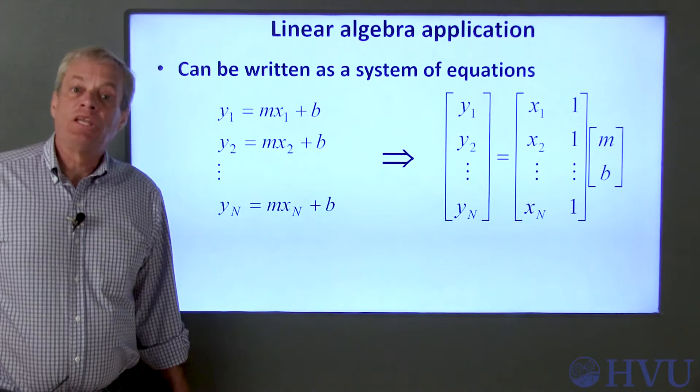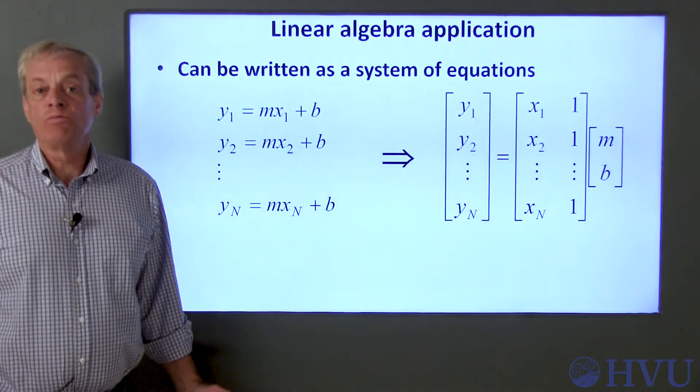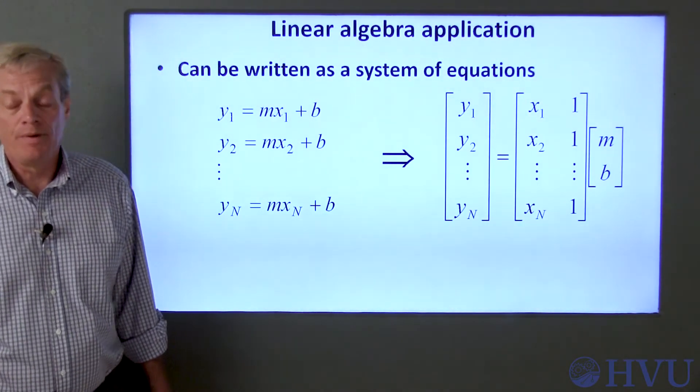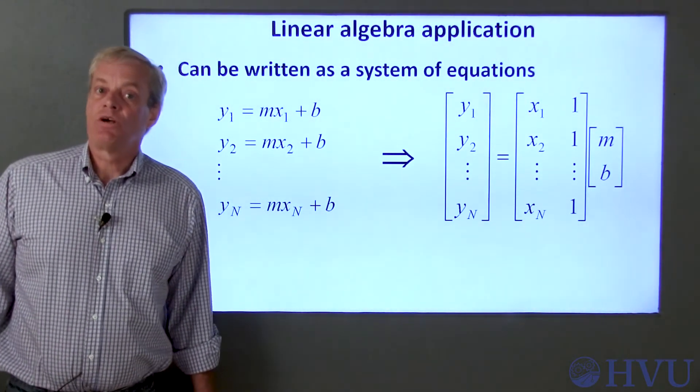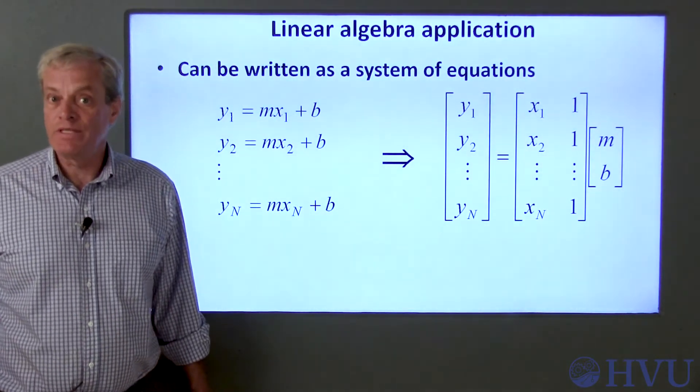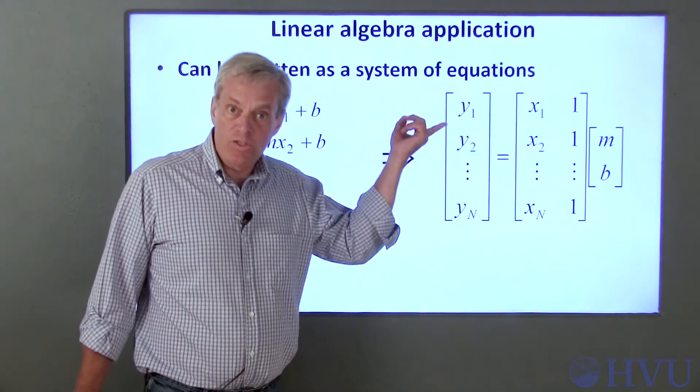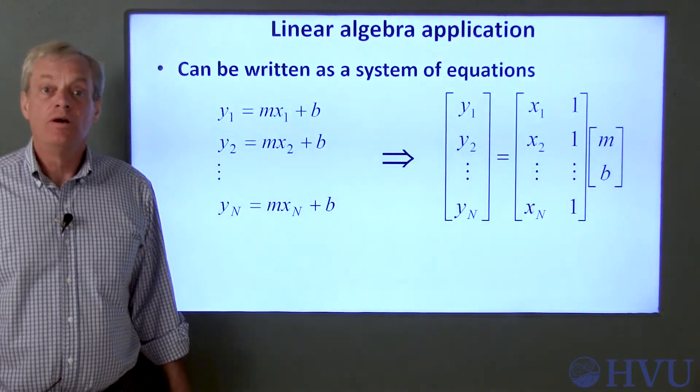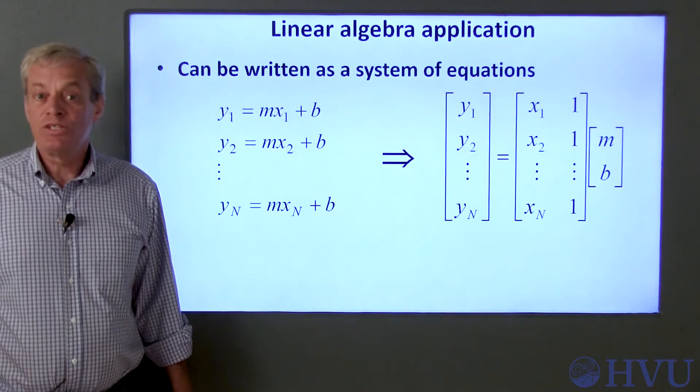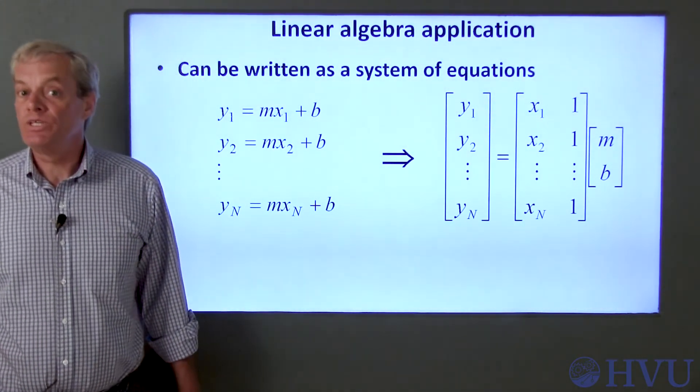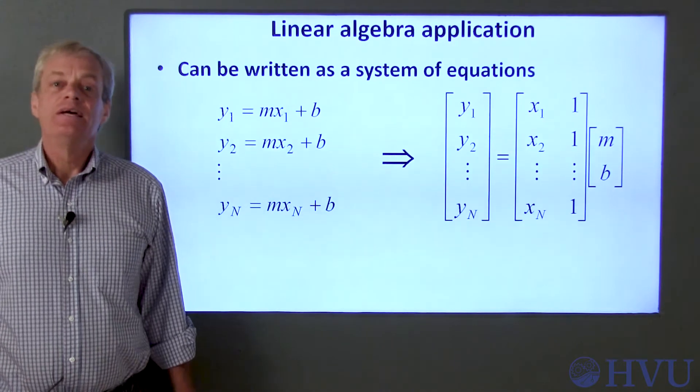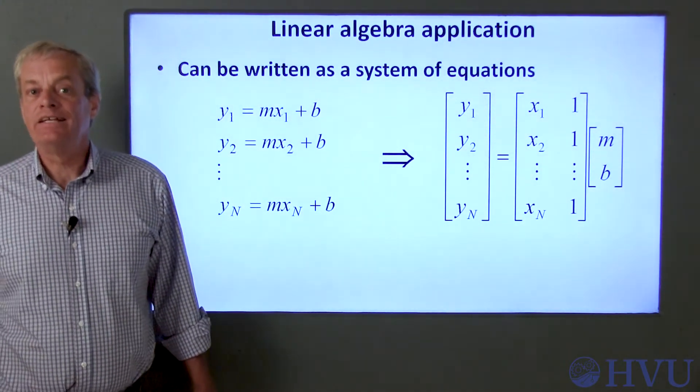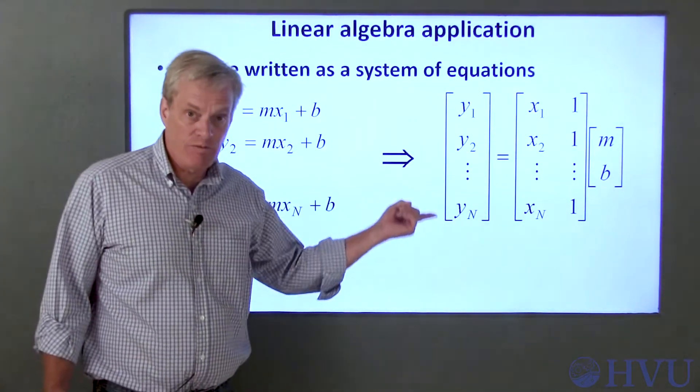But we usually have a lot more equations than unknowns. A system with more equations than unknowns is called an over-determined system of equations. This can be a problem. Since our line will usually not pass through all the data points, this system of equations will probably not have a solution that satisfies all N equations. So over-determined systems of equations don't generally have a solution without imposing additional requirements. Specifying that we wanted a least squares solution to the equations earlier provided an additional requirement that allows us to solve this system of equations.